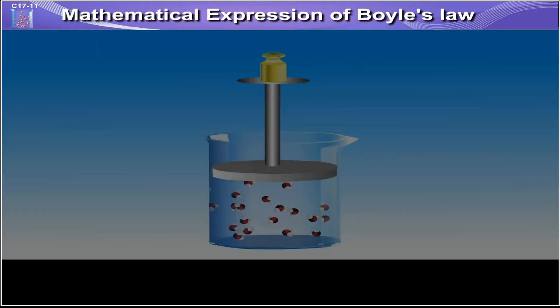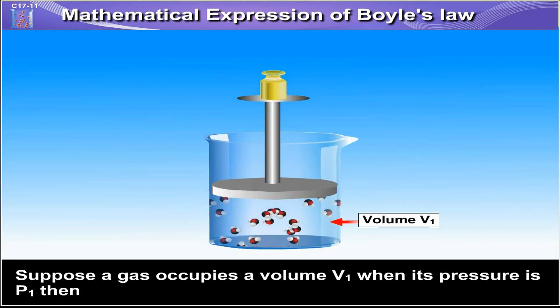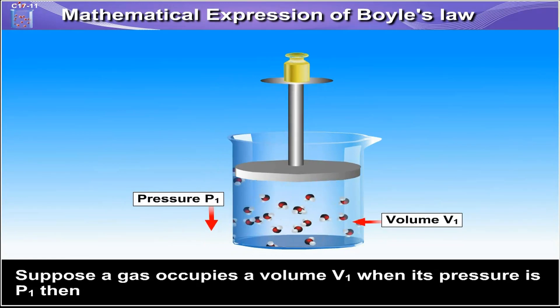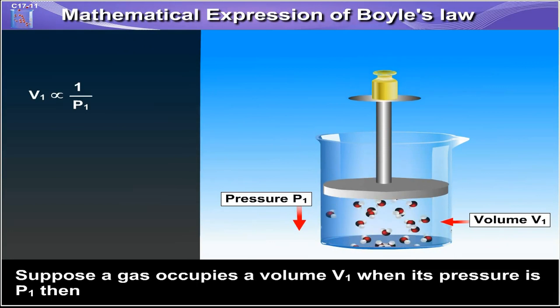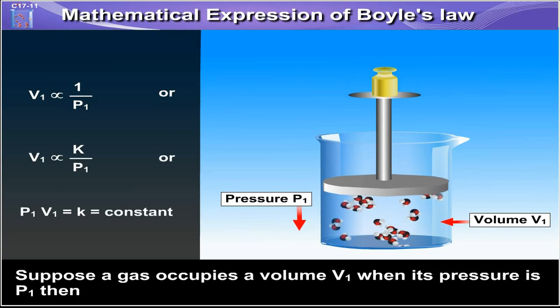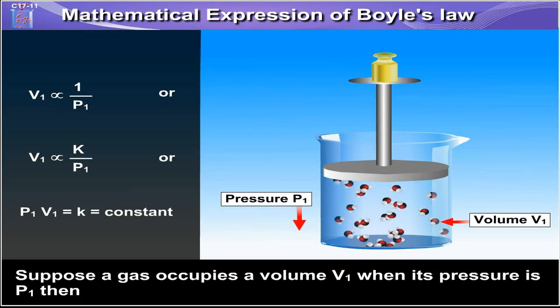Mathematical Expression of Boyle's Law. Suppose a gas occupies a volume V1 when its pressure is P1, then V1 is inversely proportional to P1, or V1 is equal to K upon P1, or P1V1 is equal to K, which is equal to a constant.